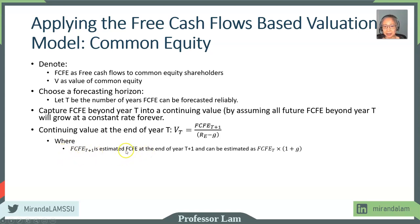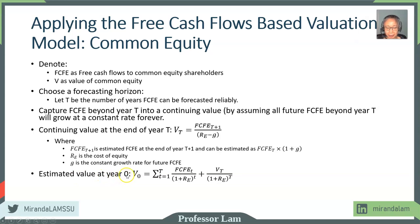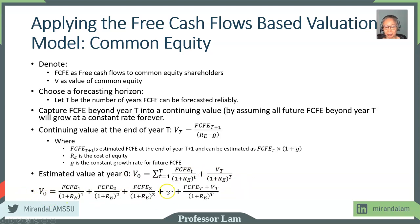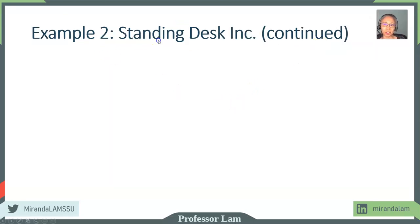There are two ways to estimate the continuing value. You can take the free cash flow at the last year of your forecast horizon times one plus the constant growth rate. The value at year zero today equals the sum discounted at the cost of equity. In Excel, we list the free cash flow each year, and at the end of the horizon, we add both the free cash flow and the continuing value. Let's go back to the standing desk example.